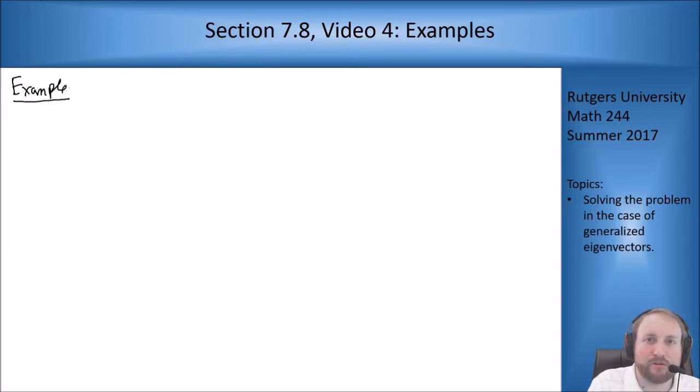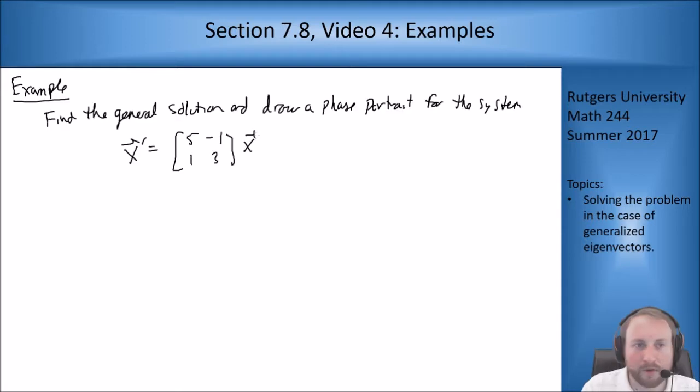Let's jump right into the example. The problem is finding the general solution and drawing a phase portrait for the following ODE system. My matrix here is 5, -1, 1, 3.